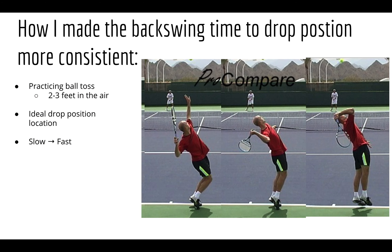To fix the inconsistency in his drop position backswing time, I practiced with Travis throwing the ball 2 to 3 feet in the air, which is the projected perfect serve mechanics. I also had Travis hold his racket in the ideal drop position location to get his muscles used to it. Then I had him run through the serving mechanics first slow and then fast, watching to see if his racket is in the ideal drop position location.